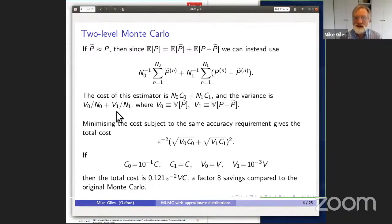However, the variance, if we use independent samples, is the sum of the variances of the two parts, and each of those parts is proportional to one over the number of samples. We can do a constrained optimization, minimizing the cost subject to the same overall root mean square accuracy of epsilon, and that gives this expression for the total cost.